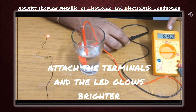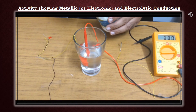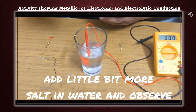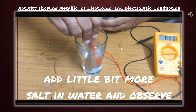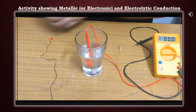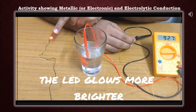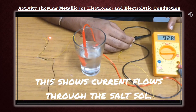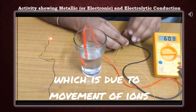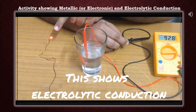Now attach the terminals and observe the reading on the multimeter. Add a little bit more salt and observe what happens. The LED glows more brightly — this shows that current flows through the salt solution, which is due to the movement of ions, that is sodium and chloride ions. This shows electrolytic conduction through salt water.